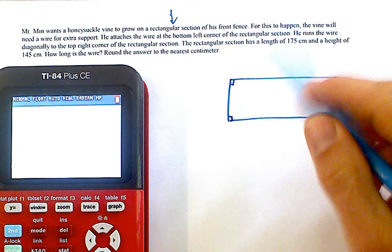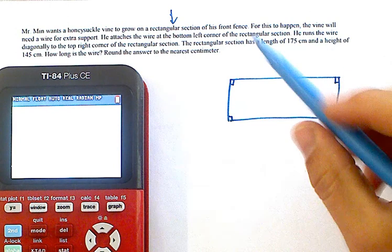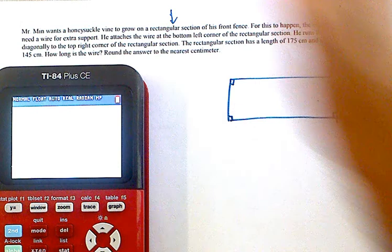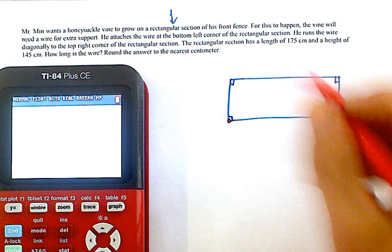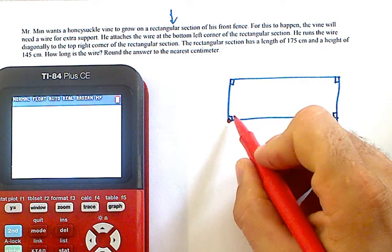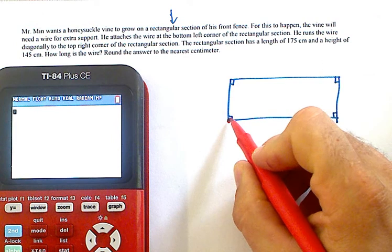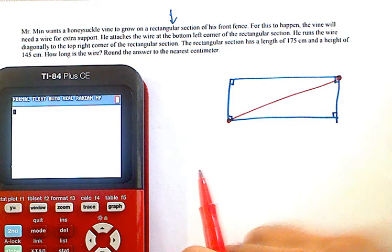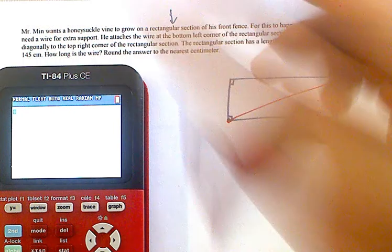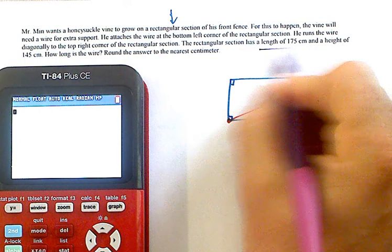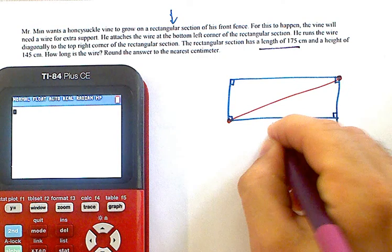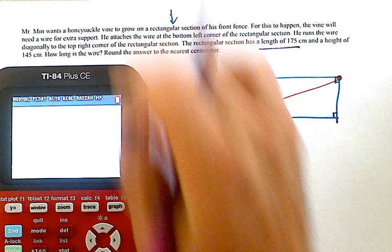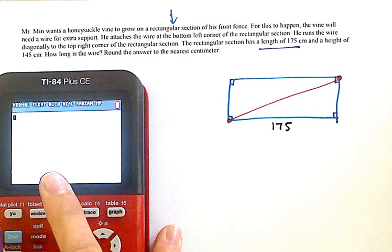Now it says for extra support, he attaches the wire from the bottom left corner and then he runs the wire to the top right corner. Right away we've come up with a right triangle here. Length is usually the longer side of a rectangle, so we'll say this is 175, and we're going to say the height is 145.